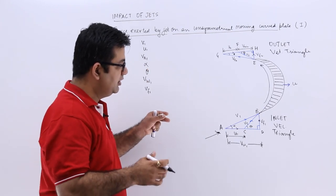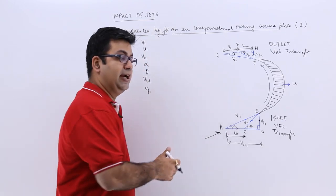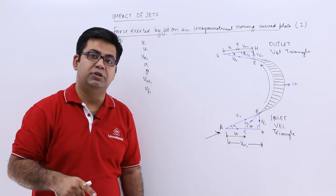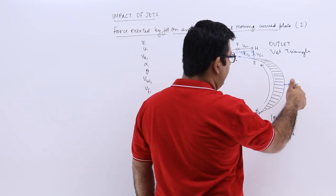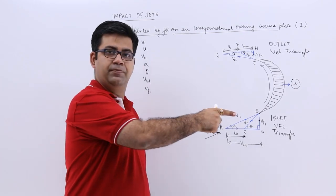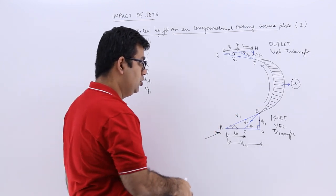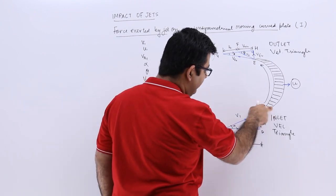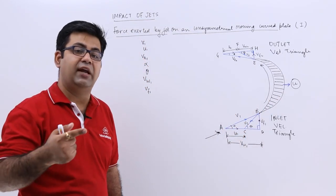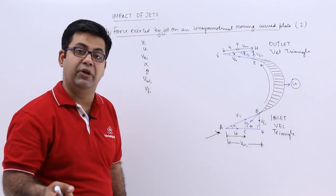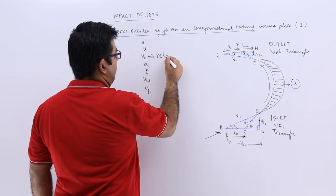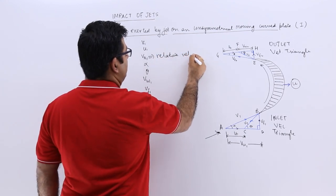The jet of water is coming at a velocity of V1 towards the plate, so V1 is the absolute velocity of the jet of water. The plate is moving with a velocity U, and the jet and the plate both move in the same direction. So the jet will not strike the plate with the absolute velocity — there is a relative motion between the two. It strikes with Vr1, which is the velocity of the jet with respect to the plate.